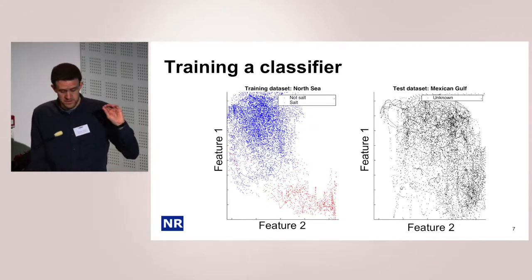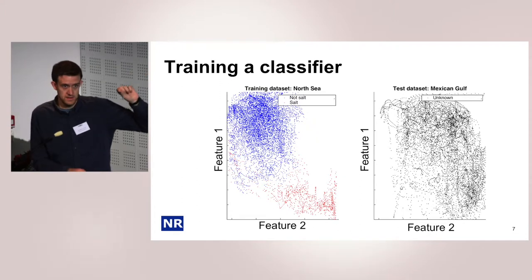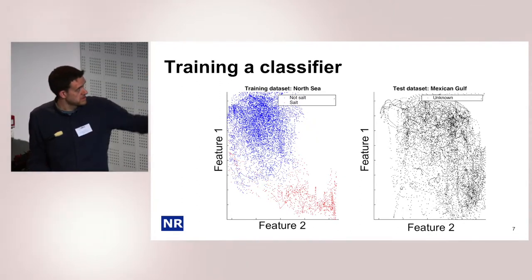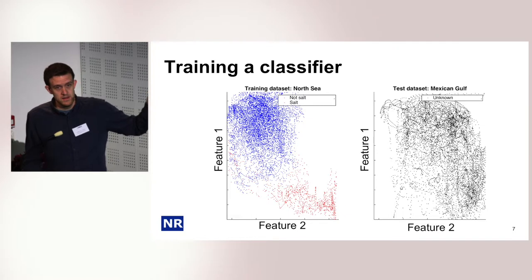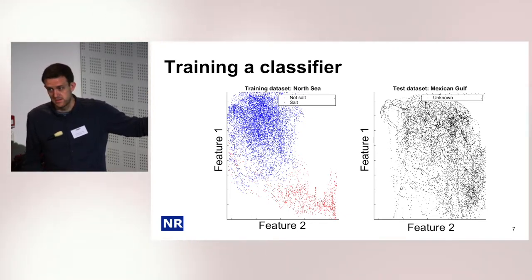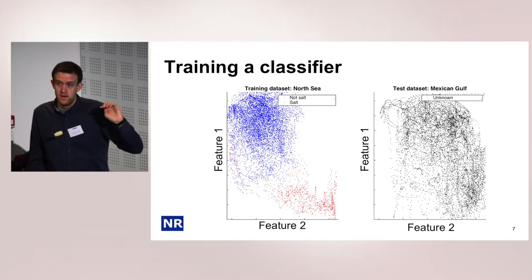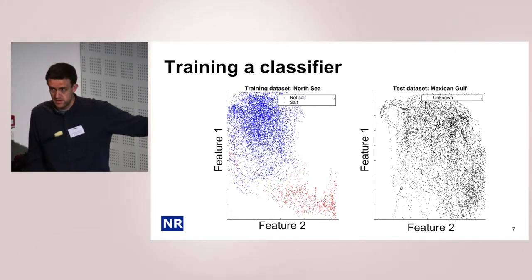If we take the features and plot them against each other — taking each pixel and collecting the feature values — we can plot them as a function of each other. This is called the feature space. In this feature space, we get some relationship between the two classes. We see that the salt pixels have low coherency and low energy, so they cluster on one side of the feature space.